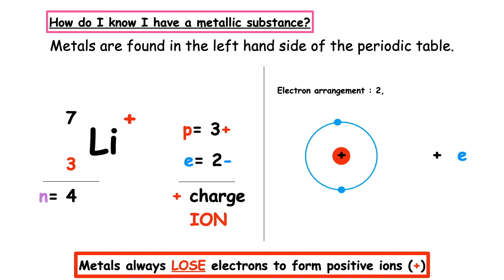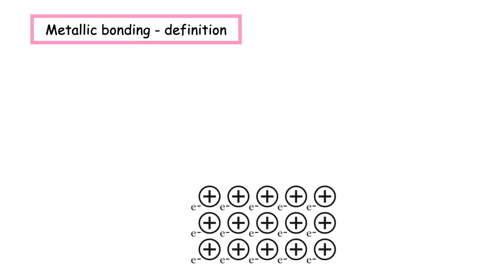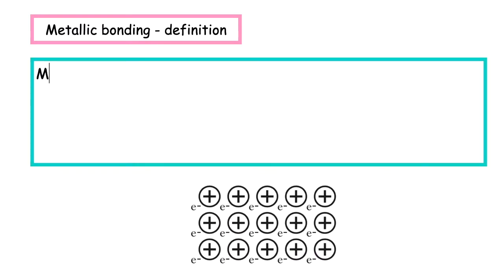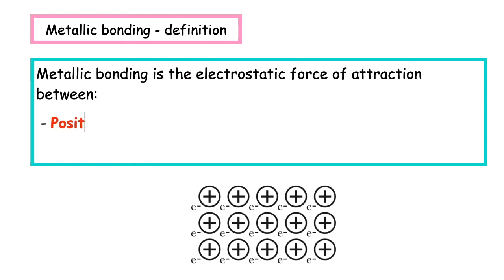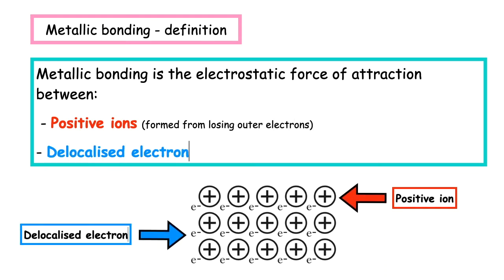The electron sits next to this. Because the electrons are able to move we say that those are delocalized. This allows us to work out the key definition for metallic bonding. Metallic bonding is the electrostatic force of attraction between positive ions which are formed from losing the outer electrons and the delocalized electrons, and these are the electrons that can move.